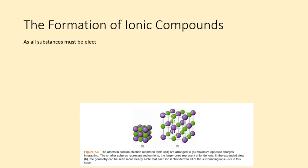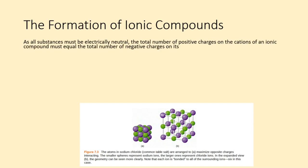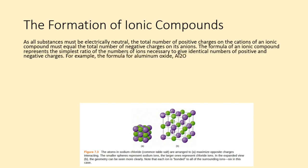As all substances must be electrically neutral, the total number of positive charges on the cations of an ionic compound must equal the total number of negative charges on its anions. The formula of an ionic compound represents the simplest ratio of the numbers of ions necessary to give identical numbers of positive and negative charges. For example, the formula for aluminum oxide, Al2O3, indicates that this ionic compound contains two aluminum cations, Al3+, for every three oxide anions, O2-, thus 2 times +3 plus 3 times -2 equals 0.